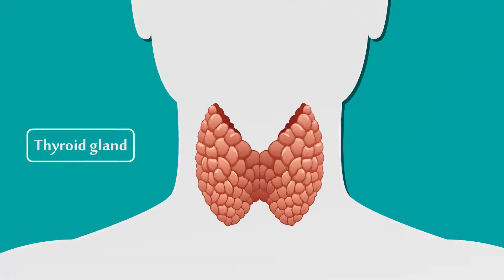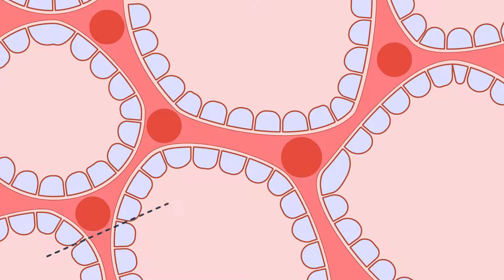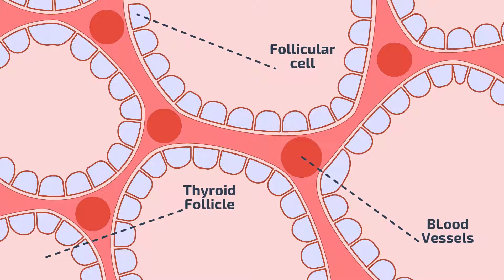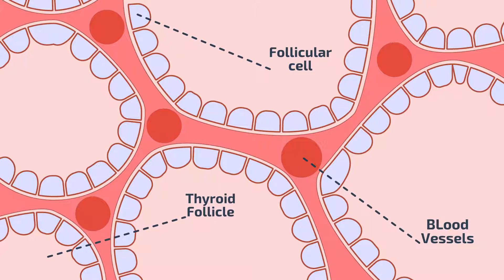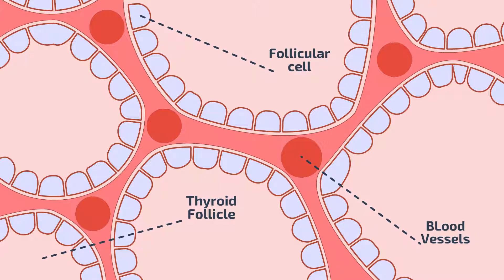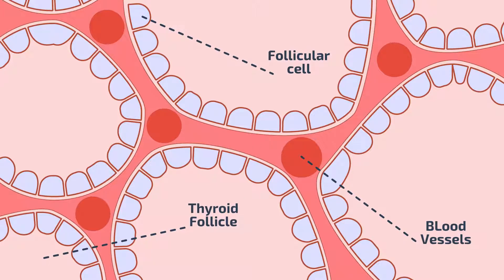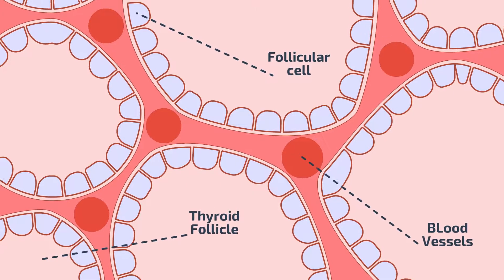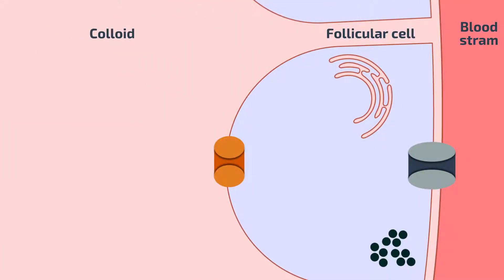The thyroid gland is located in the lower part of the neck, in front of the trachea. The gland is composed of follicles which consist of follicular cells surrounding a lumen containing a thick fluid called colloid. In between these follicles there are blood vessels. We will take a section showing the follicular cells, the lumen, and a blood vessel.